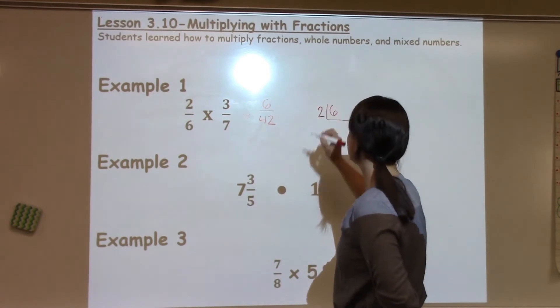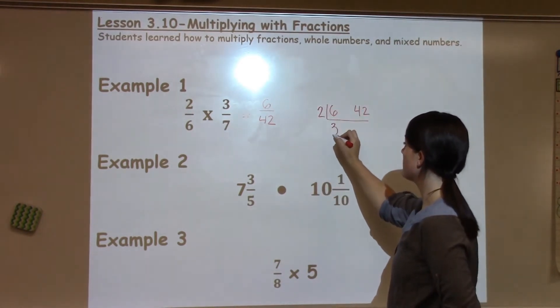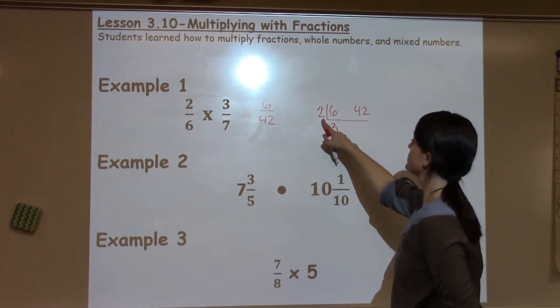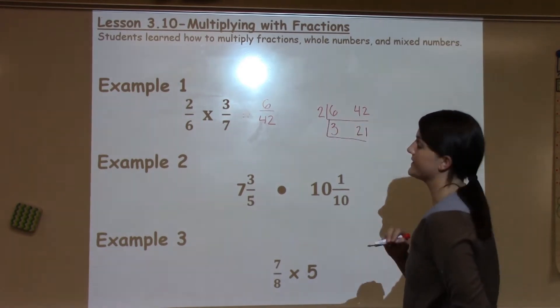Or maybe they see they could pull out something different. We're going to try a 2 just to keep it simple. 2 times what gives me 6? Well, that would be a 3. 2 times what gives me 42? 2 goes into 4 twice, 2 goes into 2 once. And now I have 3 and 21.